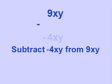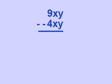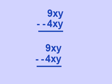So let's put our subtraction sign off to one side. We are subtracting a negative 4xy. Now let's rewrite the problem. 9xy is on top.